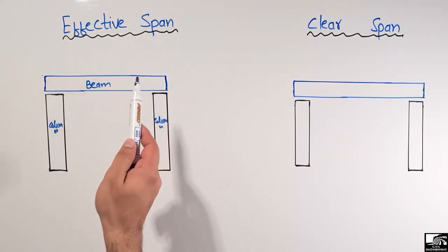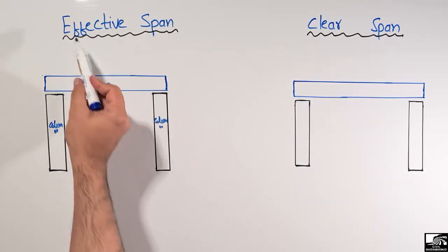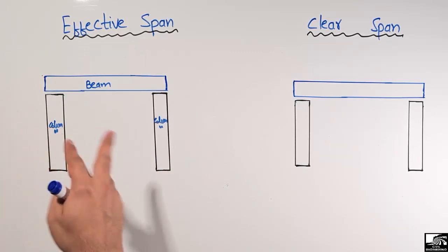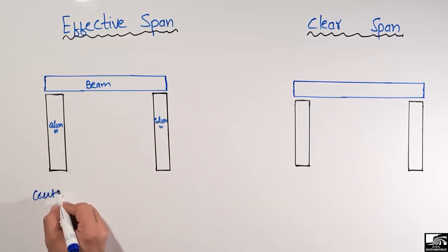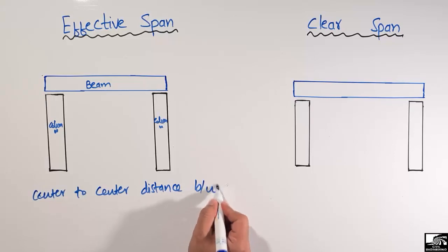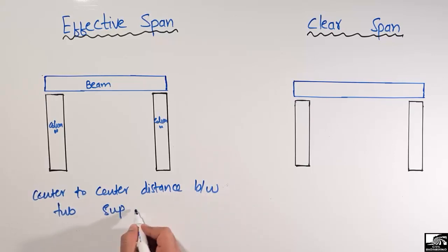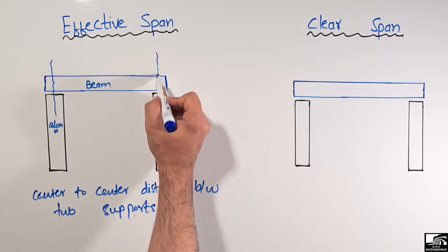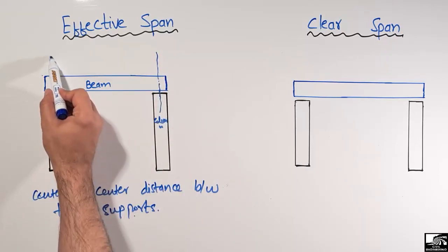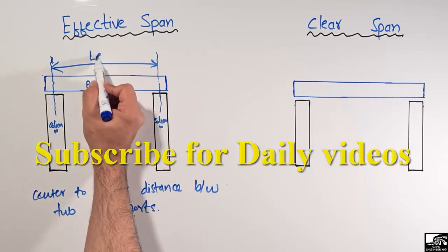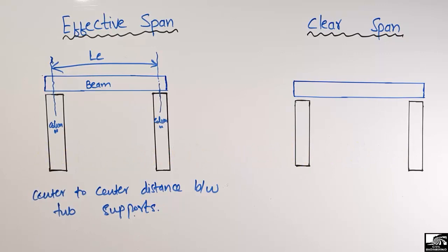So how do we define the effective span for a beam and how do we define the clear span? The effective span is basically the center-to-center distance between the two supports. This is the center of one support and this is the center of another support, so the center-to-center distance between the two supports is known as the effective span.